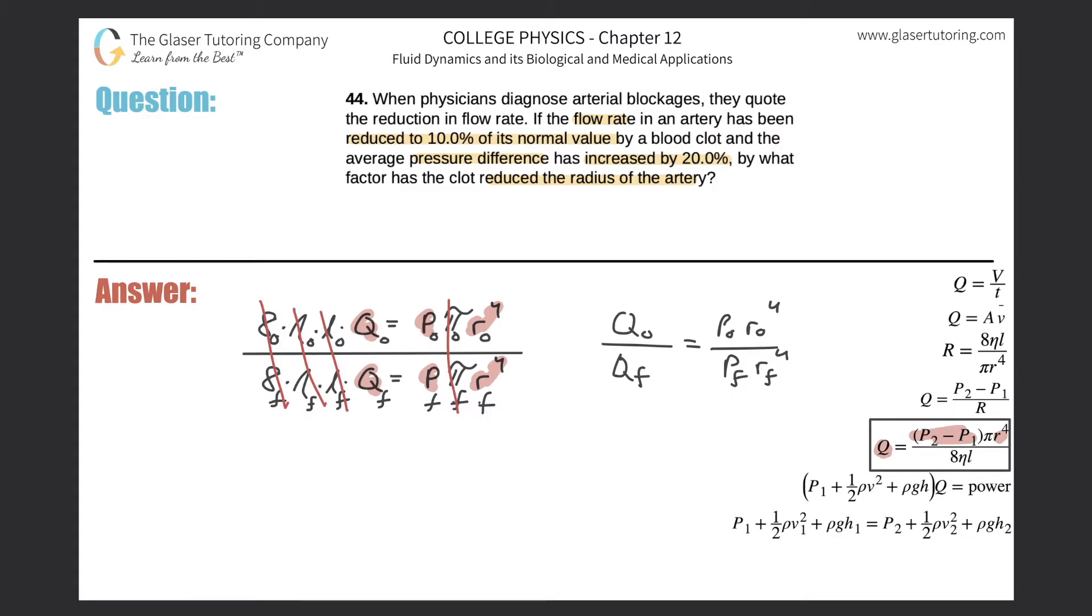So now we have to now start plugging some stuff in. So first piece of information that tells us if the flow rate in an artery has been reduced to 10% of its normal value. So that means that the new flow rate will be equal to 10% or 0.1 of the original flow rate. Does that make sense? Based on what this is saying. Now if that's the case, before I do that, let's also now take a look at the next piece.